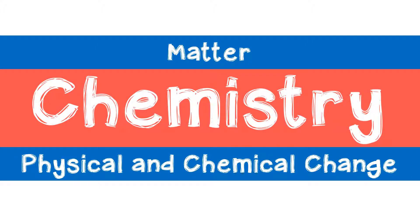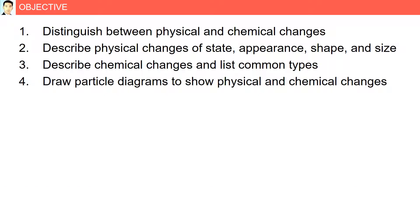Physical and chemical change. Objectives: distinguish between physical and chemical changes; describe physical changes of state, appearance, shape and size; describe chemical changes and list common types; draw particle diagrams to show physical and chemical changes.